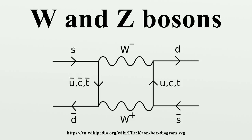The discovery of the W and Z bosons was considered a major success for CERN. First, in 1973, came the observation of neutral current interactions as predicted by electroweak theory. The huge Gargamelle bubble chamber photographed the tracks of a few electrons suddenly starting to move, seemingly of their own accord. This is interpreted as a neutrino interacting with the electron by the exchange of an unseen Z boson. The neutrino is otherwise undetectable, so the only observable effect is the momentum imparted to the electron by the interaction.